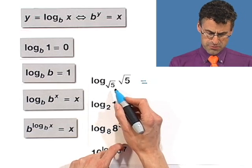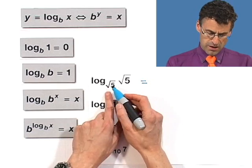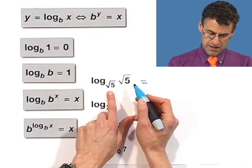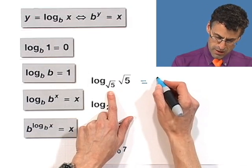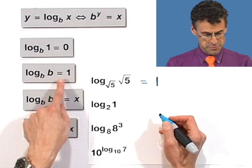What's log base square root of 5 of square root of 5? Well, square root of 5 to what power equals square root of 5? Well, the answer is 1, which is just an example of this property right here.